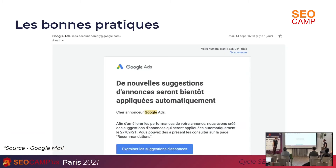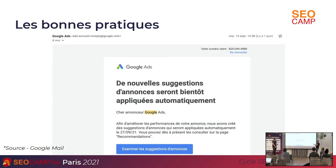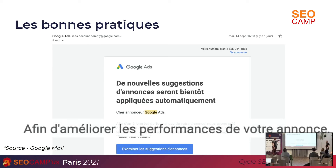Le dernier moyen, c'est l'email. La manière d'apporter les bonnes pratiques, ce sont des emails envoyés automatiquement au compte. Carrément, il va nous dire que des suggestions d'annonce vont être appliquées automatiquement le 27 du 9. Donc si vous ne faites rien, votre compte va avoir des annonces suggérées automatiquement. On va voir plus loin ce que ça donne, ces annonces.